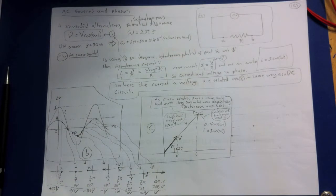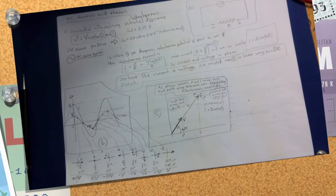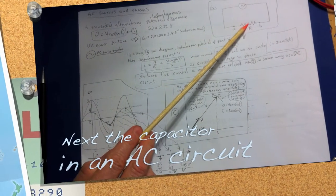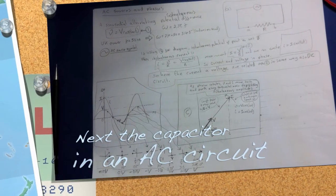Their projection on the horizontal axis represents the instantaneous current and voltage respectively. That's the case for this, just a simple resistor with an alternating source.